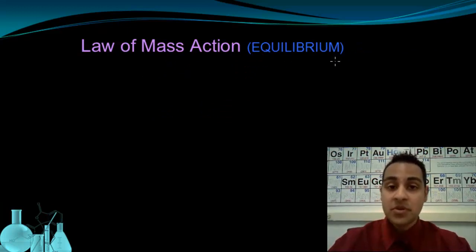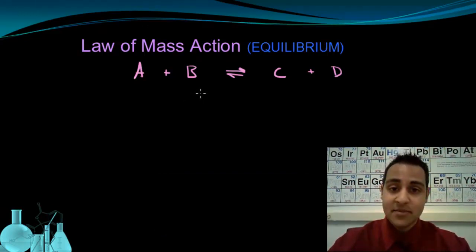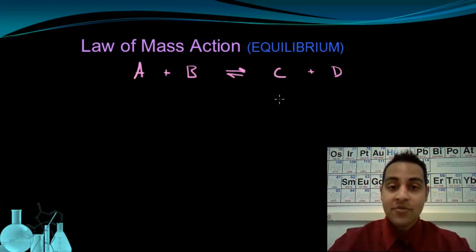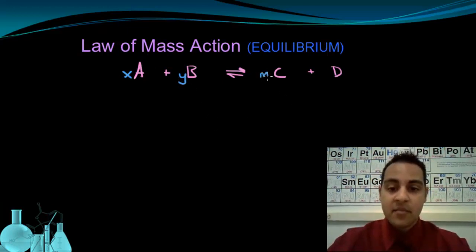Now let's look at the law of mass action for an equilibrium situation — a reversible reaction. The rate of reaction is proportional to the concentration of the reacting substances. The difference here is that we have to account for the fact that C and D also react together to form A and B again. Let's add coefficients: x moles of A plus y moles of B yields m moles of C and n moles of D.